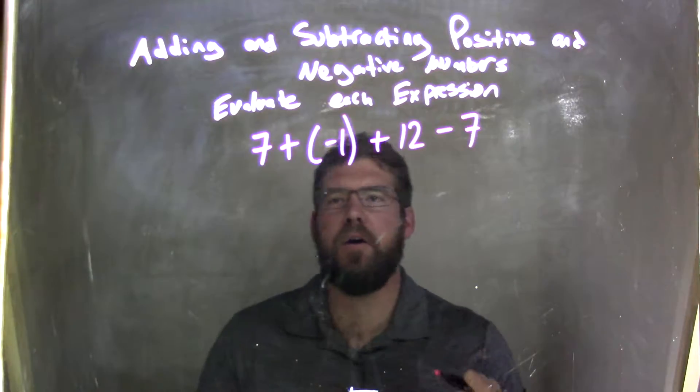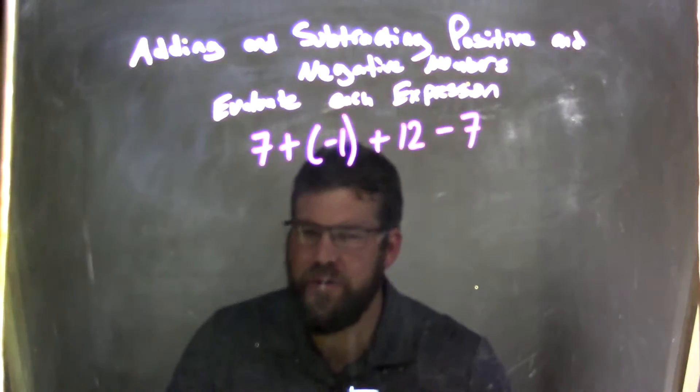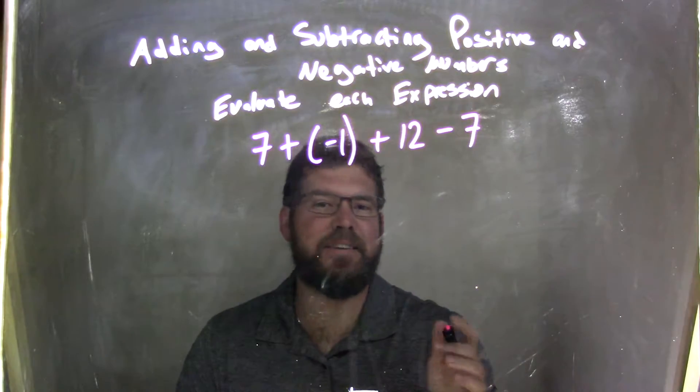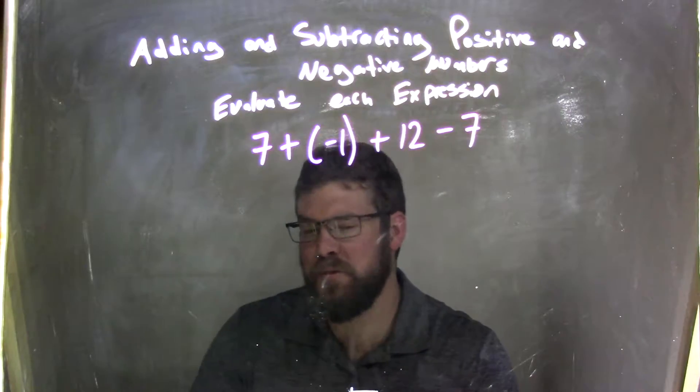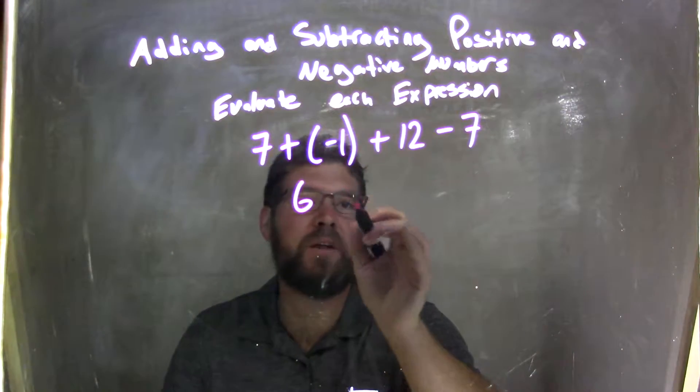Well, right now I can see that 7 plus a negative 1, and hopefully you're pretty quick at this, but 7 plus a negative 1 is moving in the negative direction by one unit, or subtracting 1 essentially, is just 6. So 7 plus a negative 1 is 6.